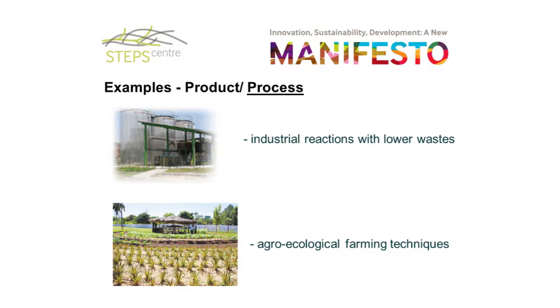Secondly, we've got process innovations. You might think of high-tech industrial processes — for example, using a new kind of enzyme which leads to lower wastes. But beyond that, there are other processes, such as how you design market gardens for community-level food security and diverse livelihoods. Some examples from Brazil and Latin America have pioneered new processes for developing agriculture at local scales.